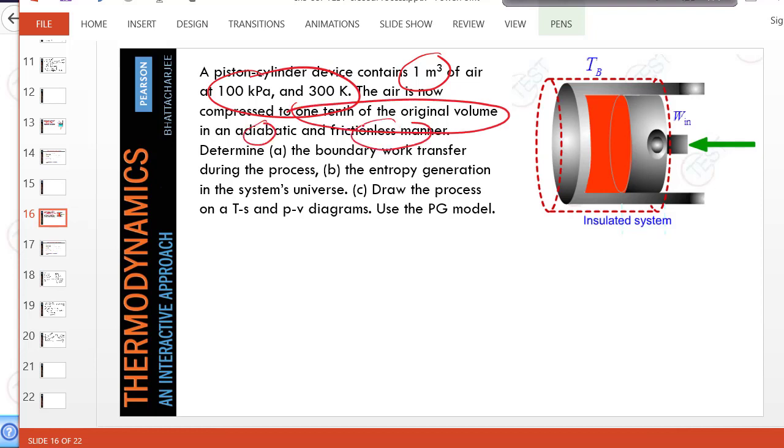There is no entropy generation in this case. We are asked to find the boundary work transfer. We'll go a step further and use the volumetric compression ratio as a parameter.